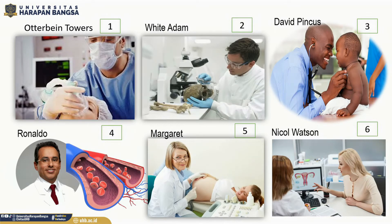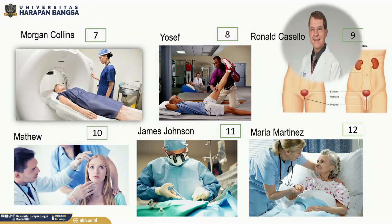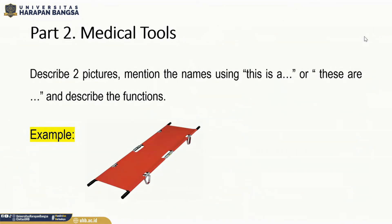These are the pictures of Part 1 on medical workers. Part 2: Medical tools. Describe the pictures. Mention the names using 'this is a' or 'these are' and describe the functions. Example: This is a stretcher. It is a tool for carrying patients.